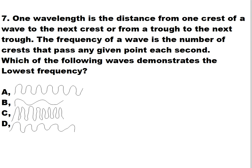Question seven: one wavelength is the distance from one crest of a wave to the next crest, or from trough to the next trough. The frequency of a wave is the number of crests that pass any given point each second. Which of the following waves demonstrates the lowest frequency? Options include waves with varying numbers of crests. The answer is letter B — the wave with the fewest crests has the lowest frequency.